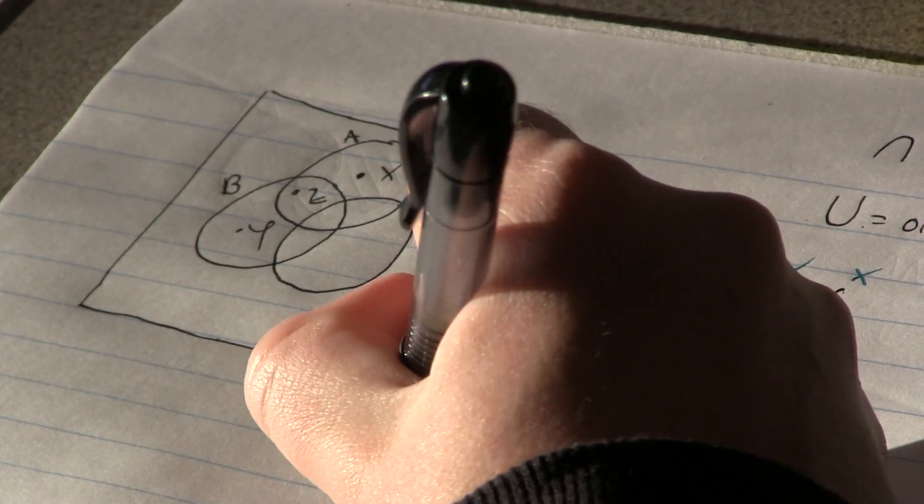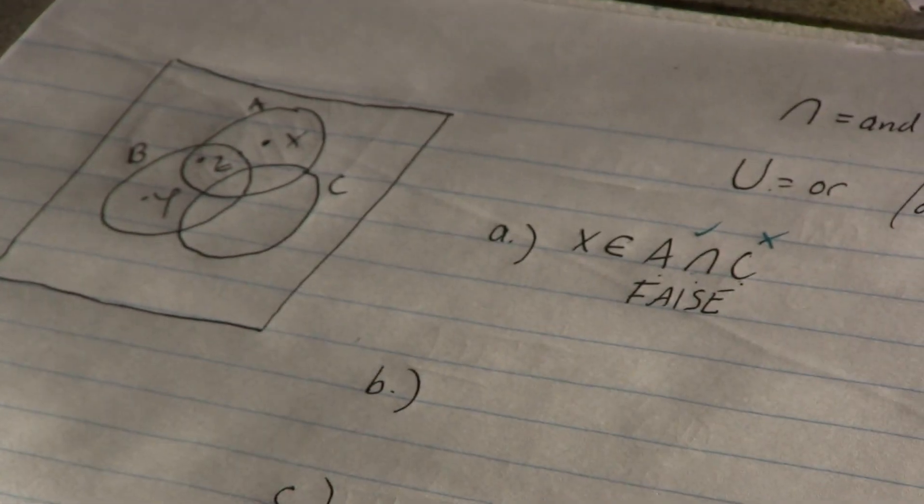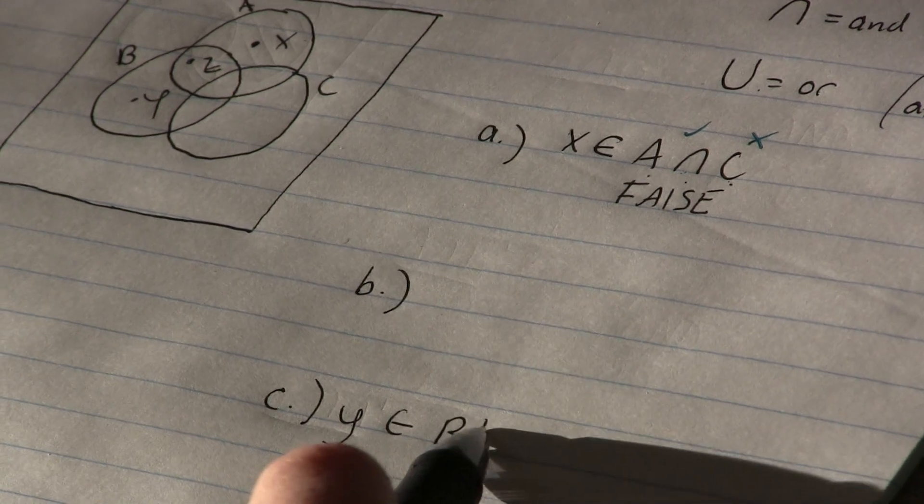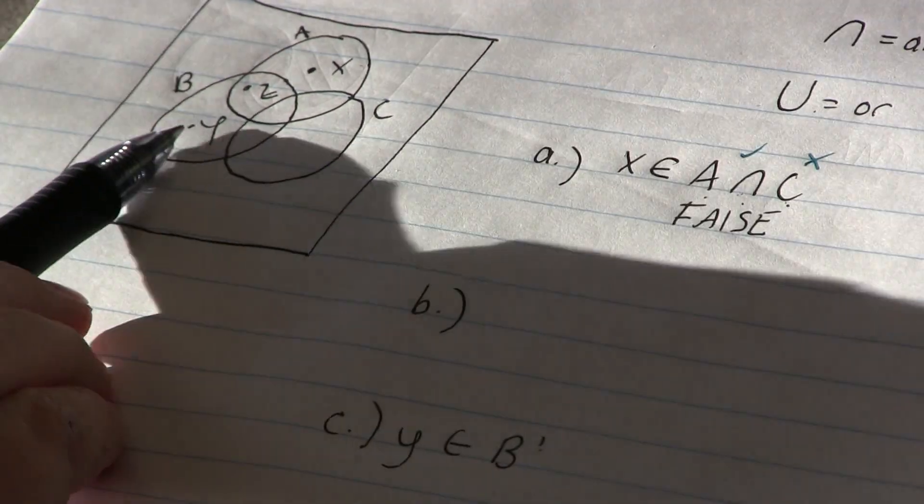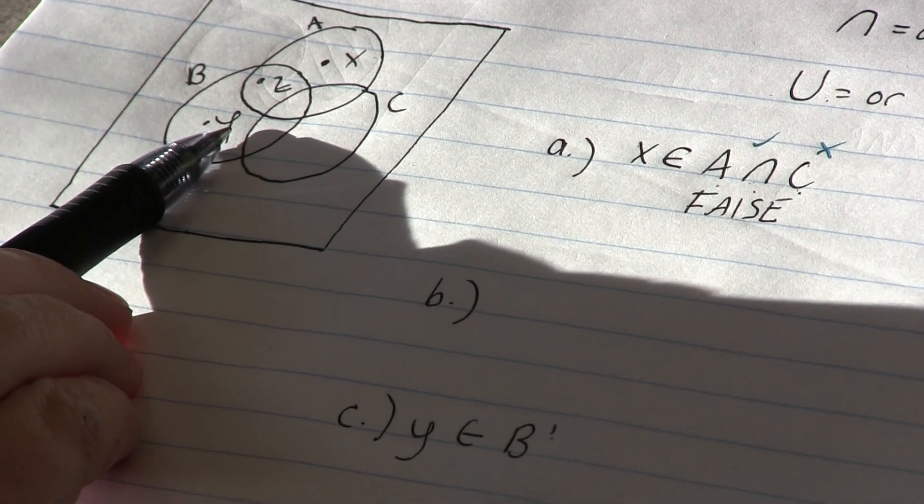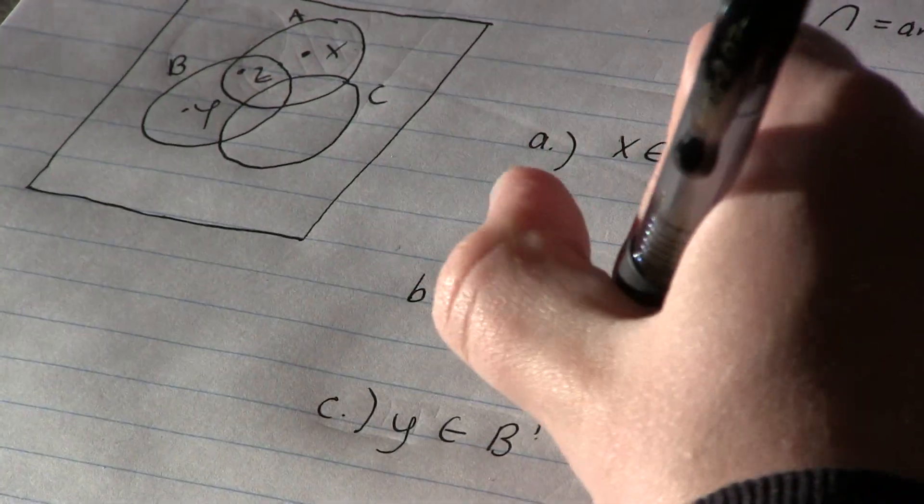Okay, so C says Y lives in B complement. Well, I know that that complement symbol means not in B. But Y does live in B. It doesn't live outside of B, so that's also false. That makes sense.